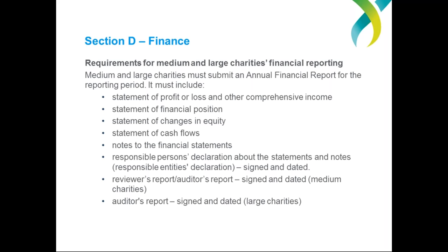The annual information statement form will request that you upload your financial report as an attachment. When you get to this point, choose your file and click the attach button — your file might be on your computer desktop or in your documents folder. Make sure that you actually click the attach button. We've had a couple of charities not do so, meaning their financial report wasn't attached when they submitted their annual information statement and we've had to get back in touch. So make sure you hit the attach button and confirm that the document uploads and attaches.